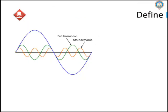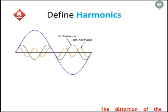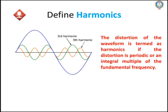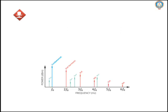Define harmonics. The distortion of the waveform is termed as harmonics if the distortion is a periodic or an integral multiple of the fundamental frequency.